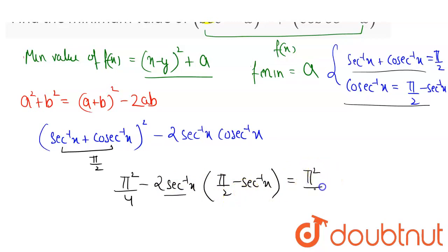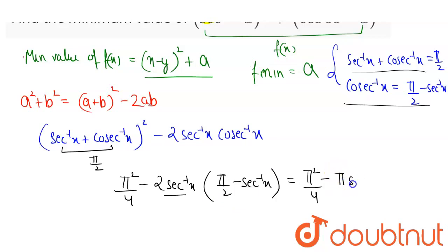So this will be pi squared divided by 4 minus pi times sec inverse x, plus 2 times sec inverse x whole squared.